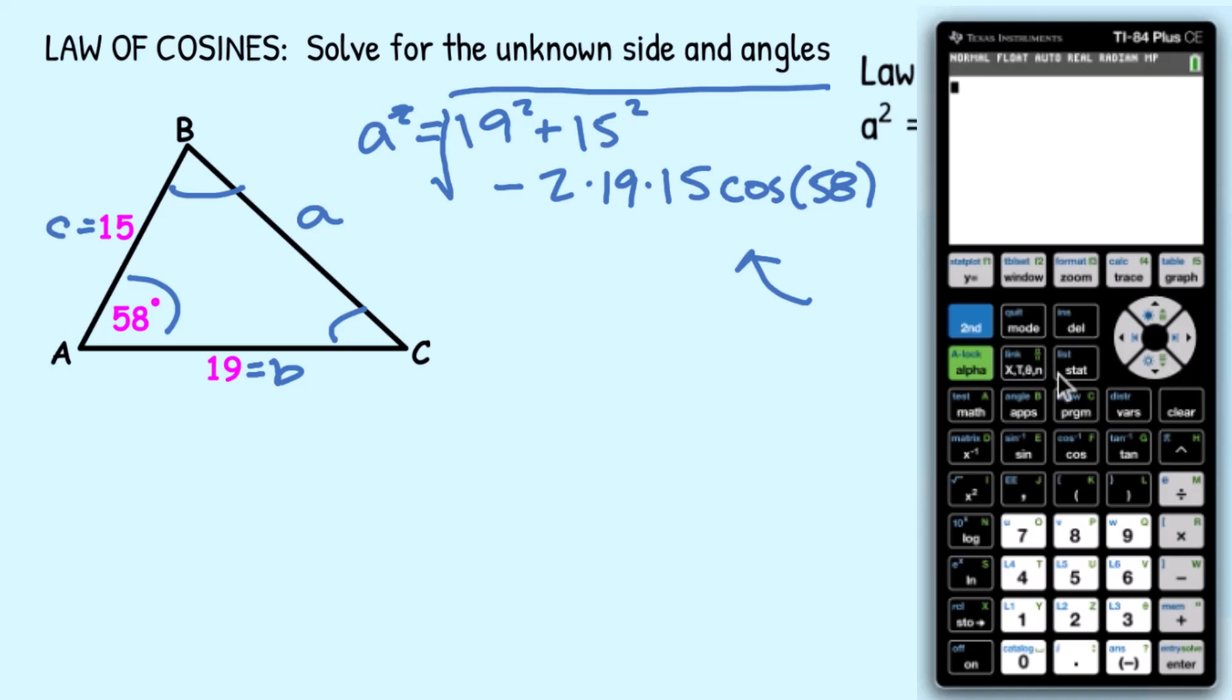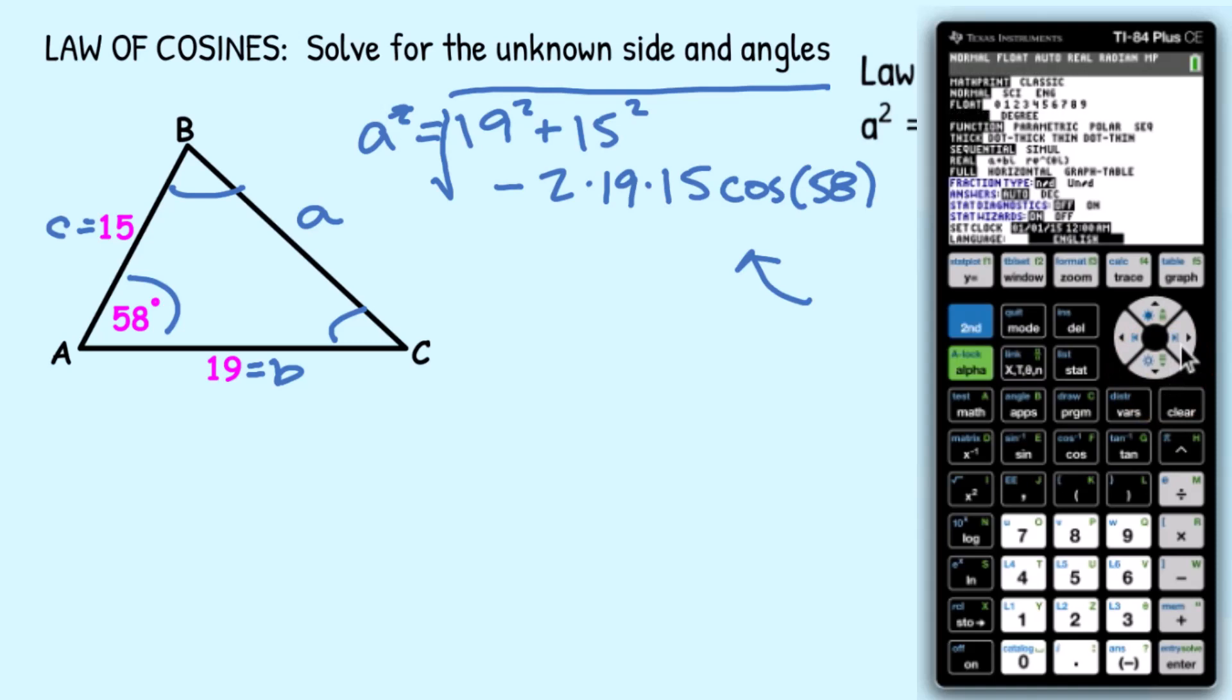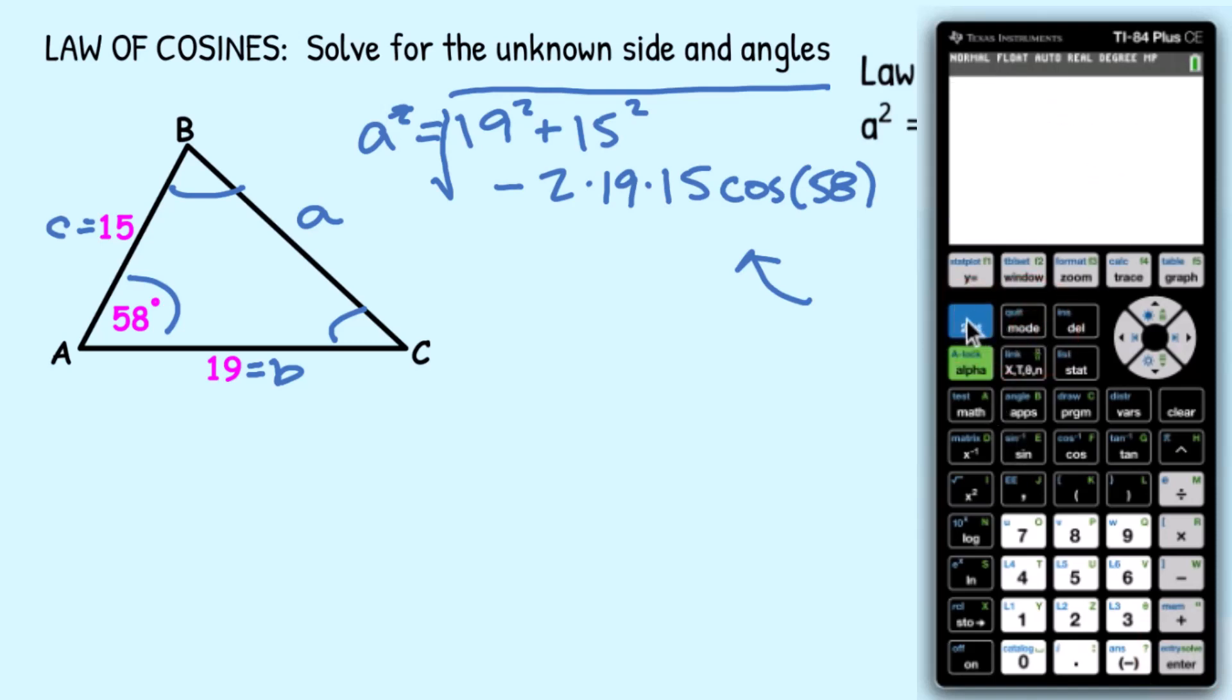So first thing I need to do in my calculator is to make sure that I'm in degrees since that's my angle measure. So I'm going to go to mode and then arrowing down to radians and degrees. I need degrees, so I arrow over to highlight and then enter to choose. I'm going to go ahead and quit here, and I'm ready for my square root. So I'm going to go second of the X squared key, and then let's type all of this in. 19, I'm going to use my squared key, plus 15 squared.